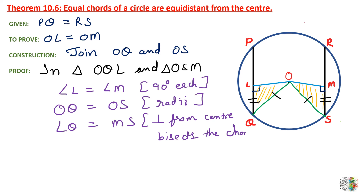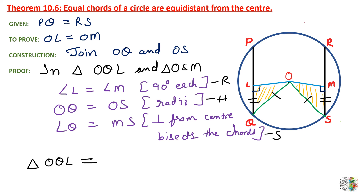So, the 90 degree angle means a right angle is present. And OQ and OS are the hypotenuse sides of the right triangles. We have both hypotenuses equal and one side equal. So according to RHS congruence, we can say that triangle OQL is congruent to triangle OSM, by RHS.